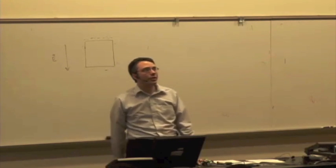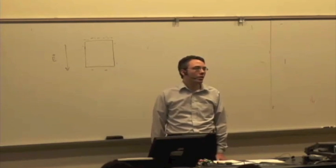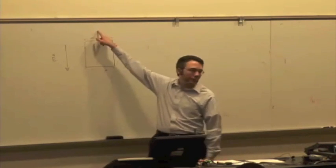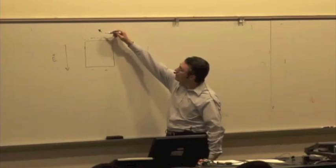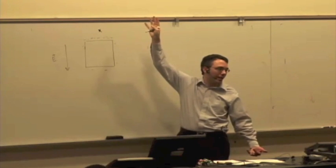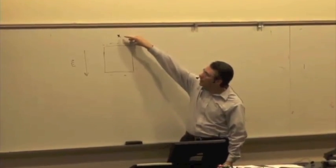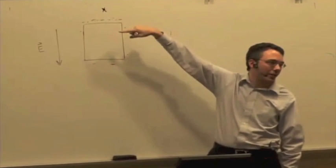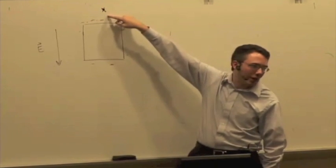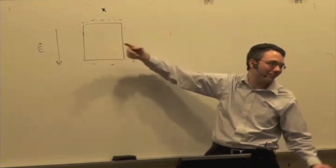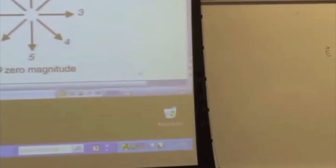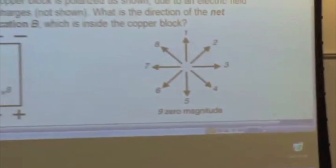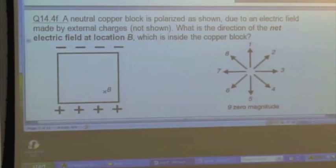How would you notice polarization? You could measure the electric field at some particular location. At an observation location, you have the original electric field applied by the external charges, but you're also going to have an electric field contribution due to the charges on the surface. If you're closer to a greater concentration of charge, you should notice a larger field there. That might be difficult to measure, but it's one way you could do it.